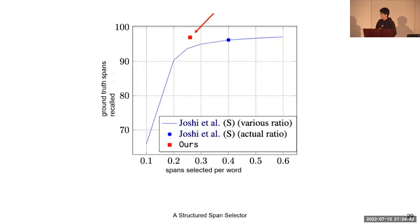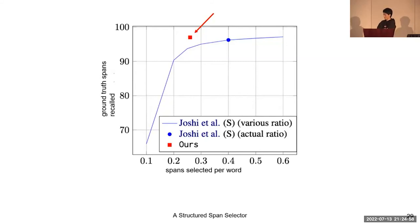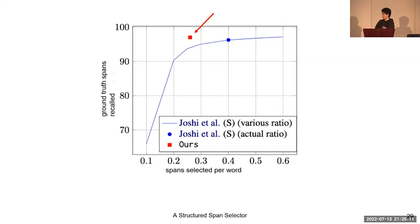We also compared the performance of span selection for coreference resolution. The x-axis is the number of spans selected per word, and the y-axis is the number of ground-truth spans recalled. Our model is the red square, well above the curve of the greedy model. From the plot, we can see that our model can recall much more ground-truth spans with fewer spans selected — that is to say, our model is much more accurate.